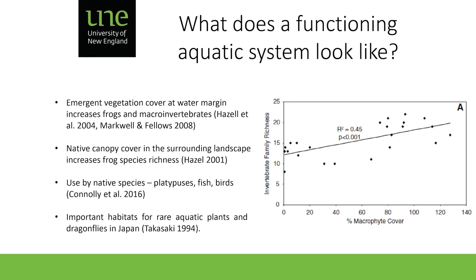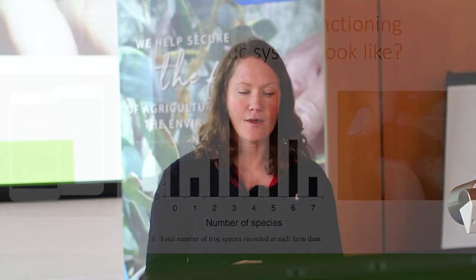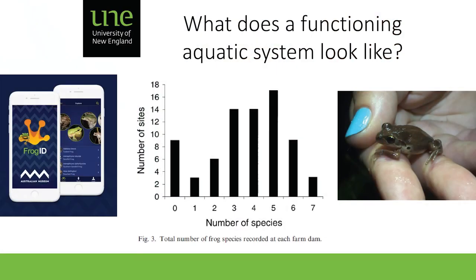In other countries, particularly Japan and Europe, there are rare and endangered species that use aquatic ecosystems like farm dams. In Australian farm dams you can expect anywhere between zero to seven frog species. If you're interested in knowing how many frog species your farm dam supports, you can download an app from the Australian Museum and simply take a recording of a calling frog — it will send back an identification. This allows landholders to do their own monitoring quite easily.